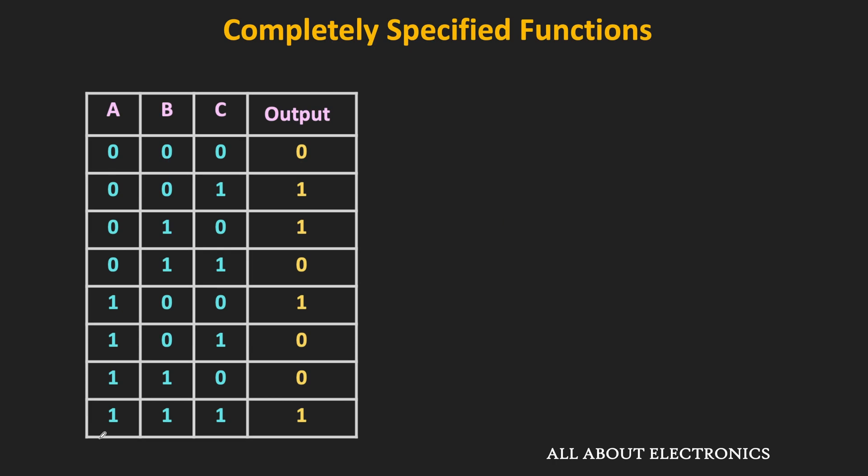So far in our discussion, the boolean functions which we have discussed were actually the completely specified functions. That means for such functions, the output is equal to 1 for certain input combinations, while for the remaining input combinations the output is equal to 0. In other words, for all input combinations, the output is well defined and it is equal to either 0 or 1.